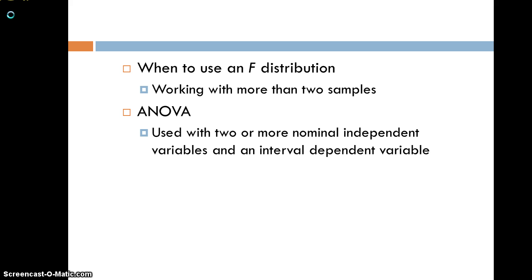When you're using more than two samples — three or more groups — you want to use what's called Analysis of Variance, and you use that when you have two or more nominal independent variables, whatever your categories are, and an interval dependent variable. We still have some kind of scale variable for our outcome variable of interest.